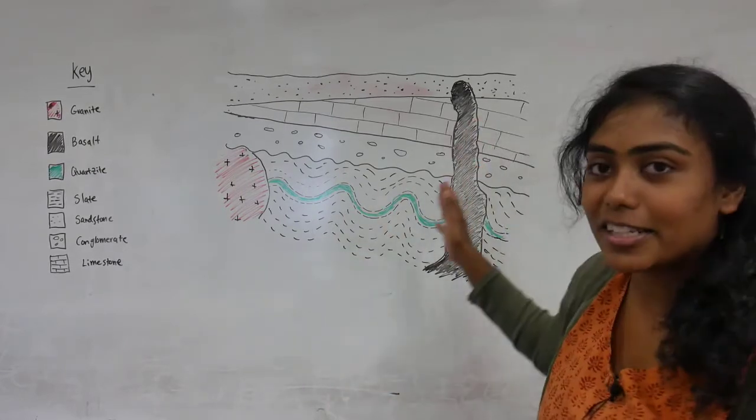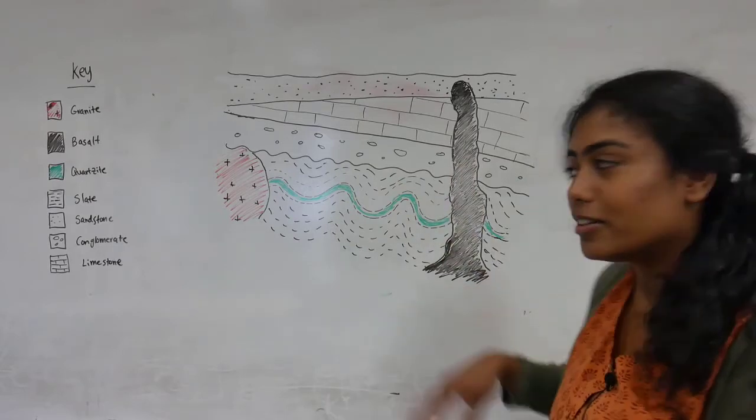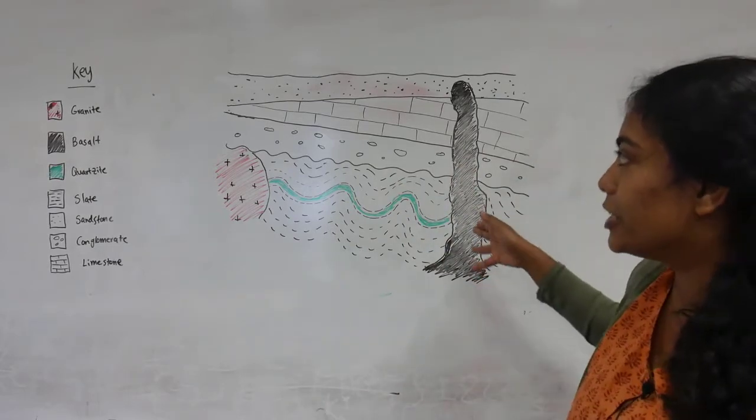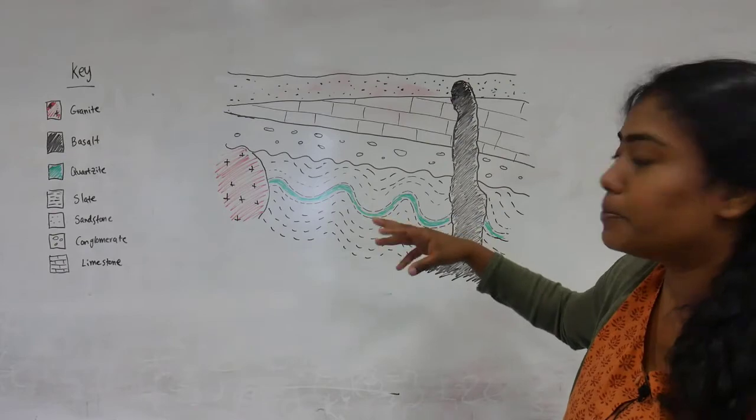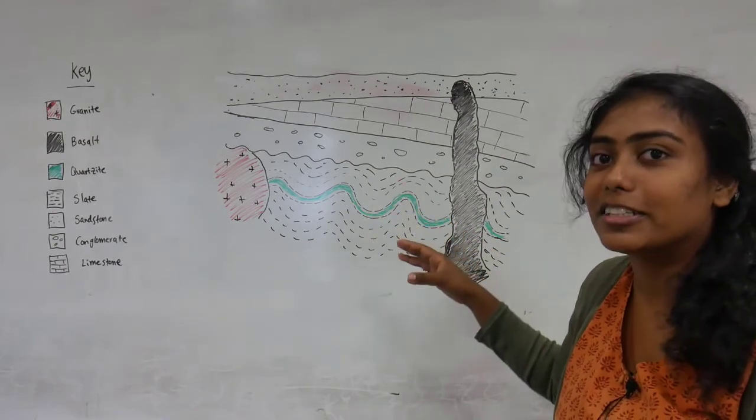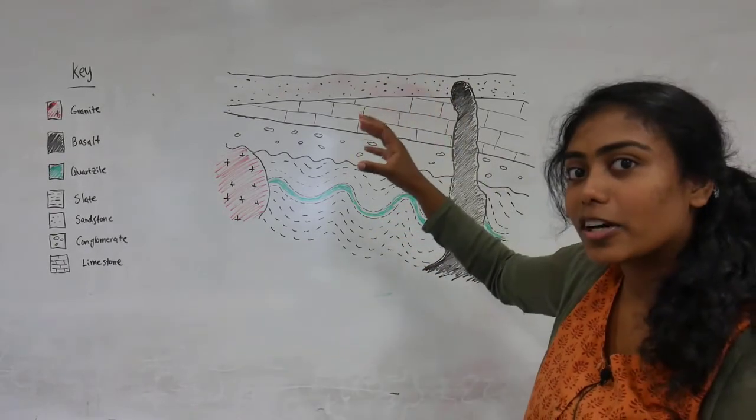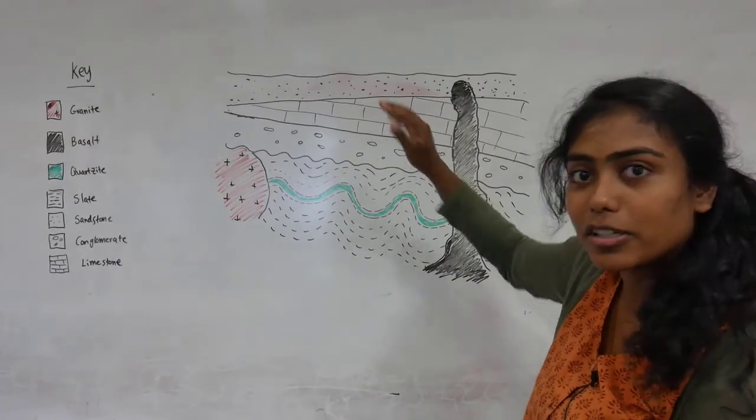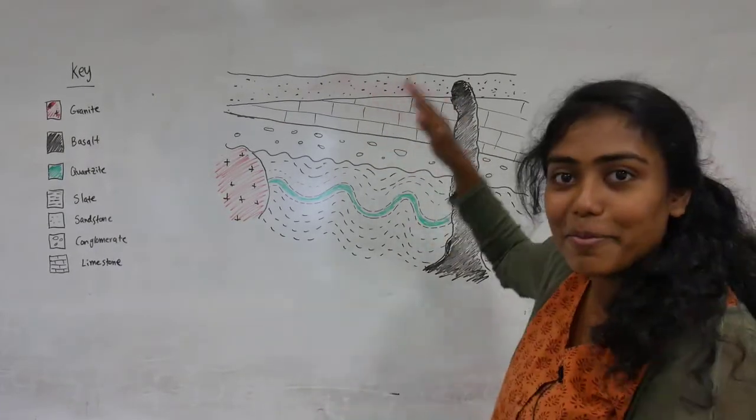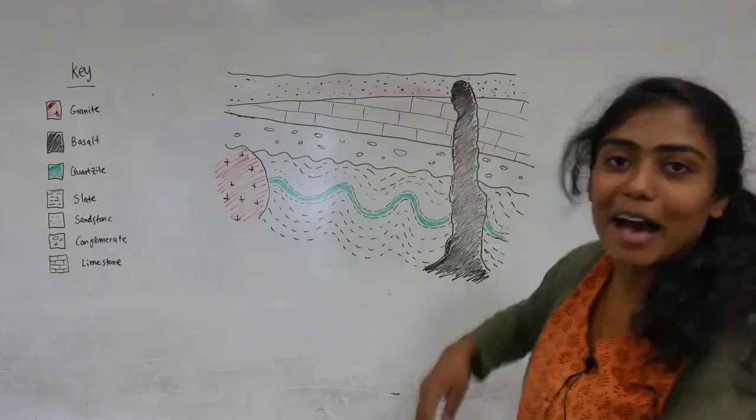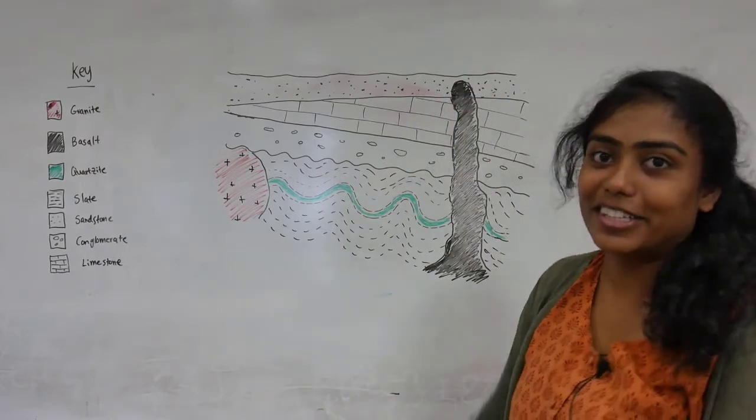It's this process of looking at rocks all around the world, using cross-cutting relationships and just basic knowledge about sedimentology to determine what are the youngest rocks on Earth, what are the oldest rocks, what happened—what's the story of what happened all throughout the history of the Earth.